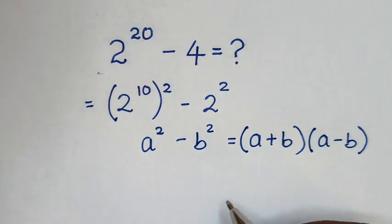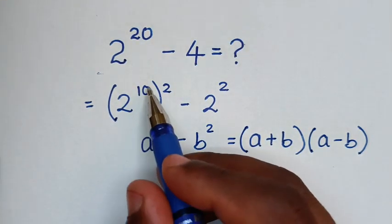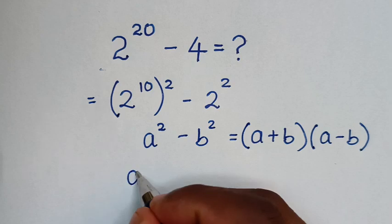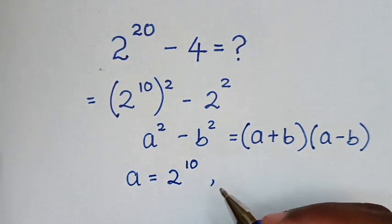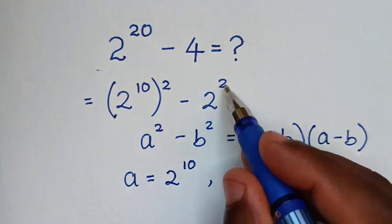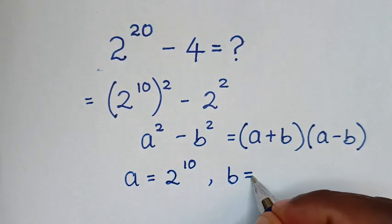So when we compare a squared with 2 to the power of 10 squared, then a is equal to 2 to the power of 10. And when we compare b squared with 2 squared, then b is equal to 2.